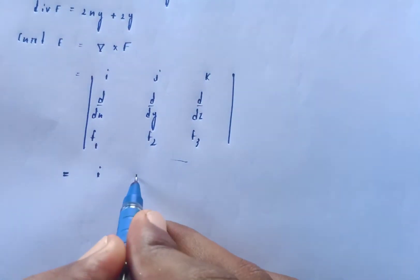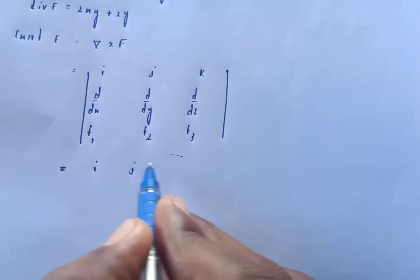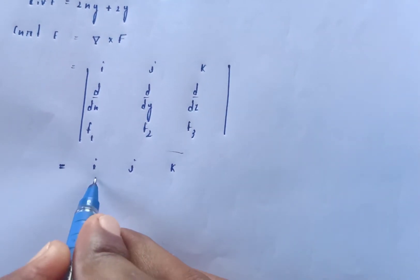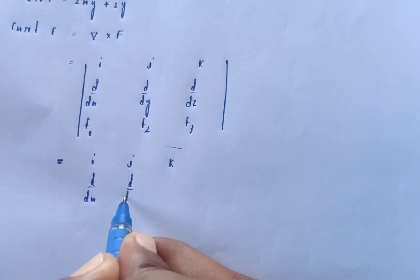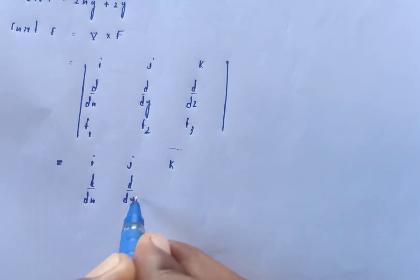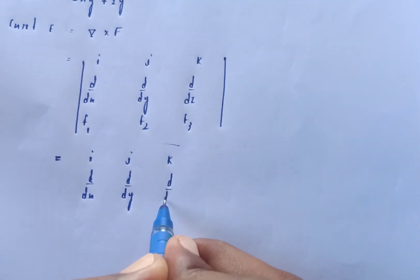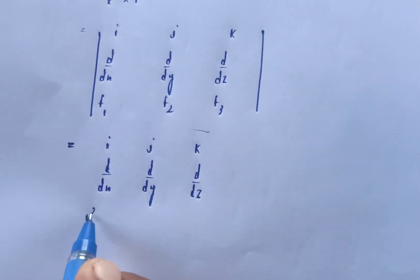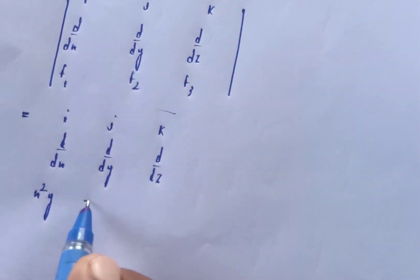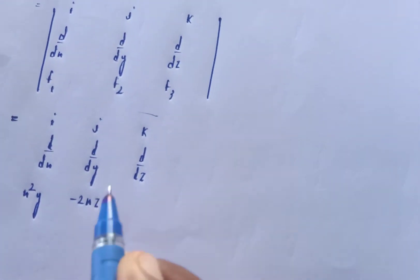For curl of f, we set up the determinant with rows: i, j, k; then d by dx, d by dy, d by dz; then f1 = x squared y, f2 = minus 2xz, f3 = 2yz.